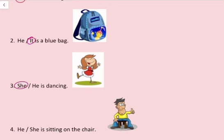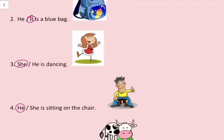Number 4. He, she is sitting on the chair. Chair pa jo baita hoa hai, vah ek man hai, us ke liye hum he use karenge. He is sitting on the chair.